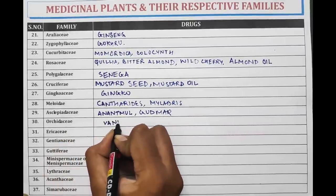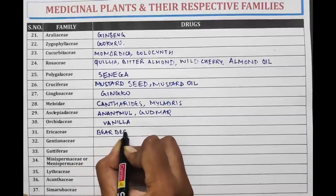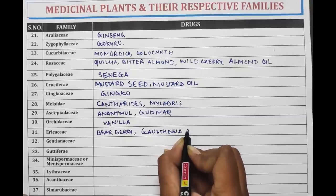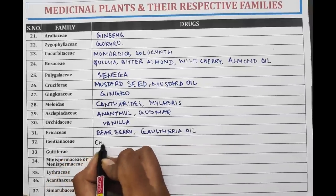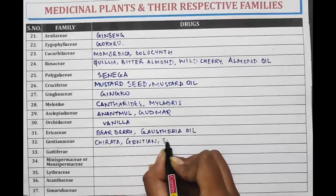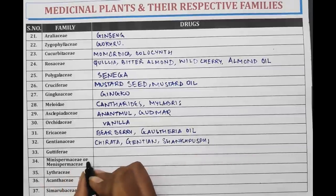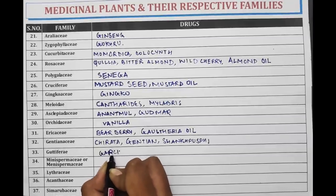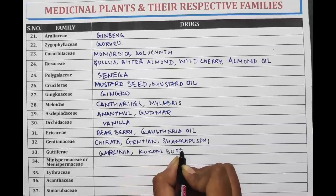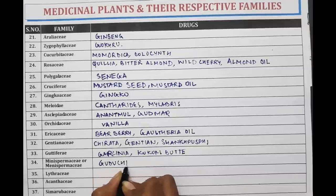Orchidaceae is the family of Vanilla. Gentianaceae includes Janshian, Shankhpushpi, Gotu Kola. The family of Garcinia includes Kokum Butter.